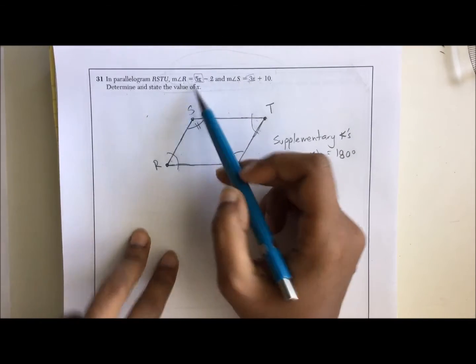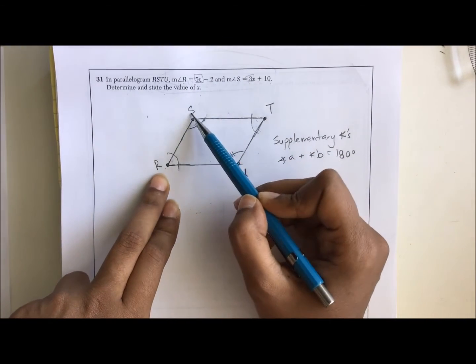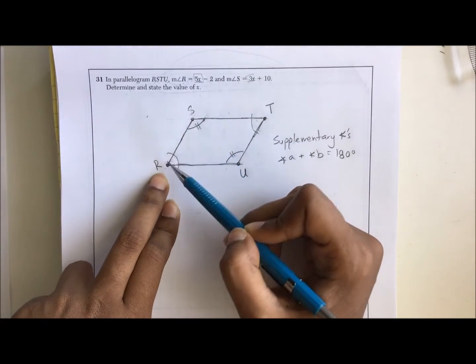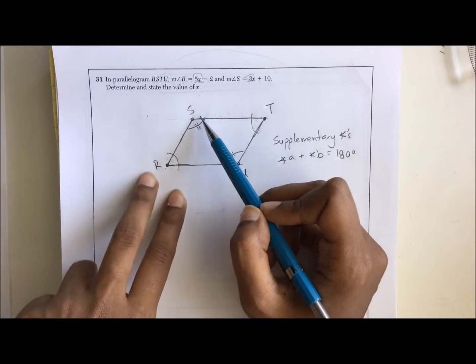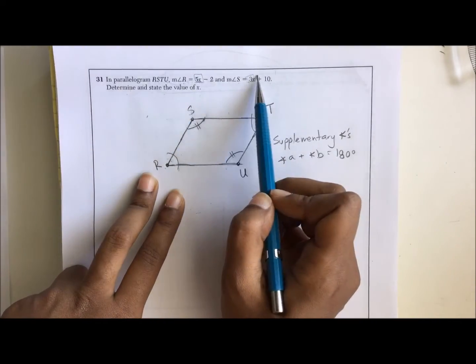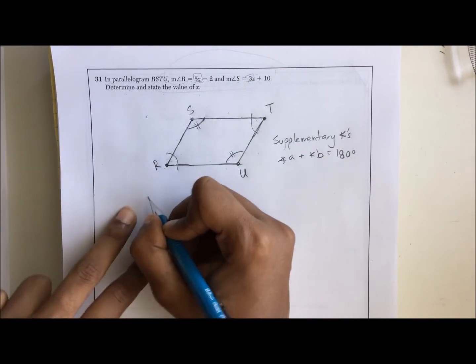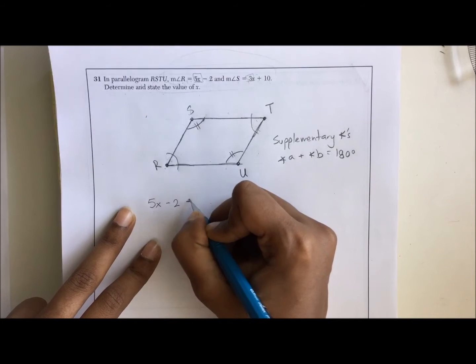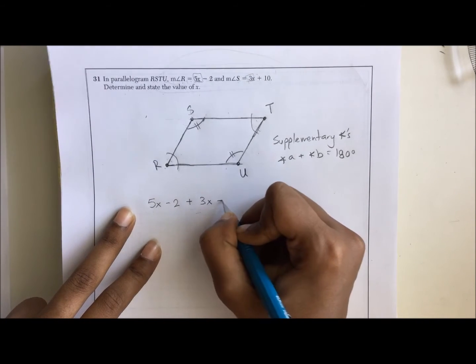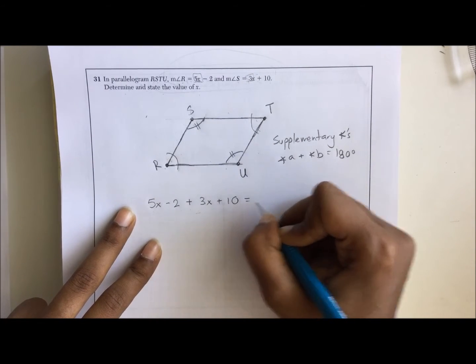Now what are the two angles we're given? Measure angle R and measure angle S. Measure angle R and measure angle S are consecutive angles. That means they're supplementary. So we're going to take these equations and put them together. So we have 5x minus 2 plus 3x plus 10 equals 180.